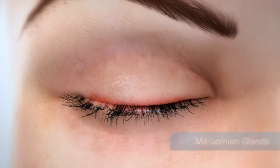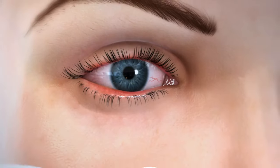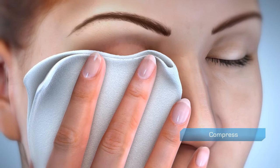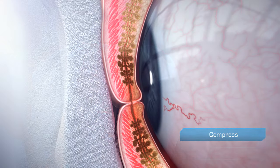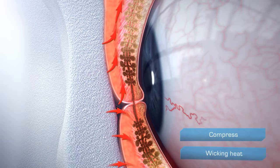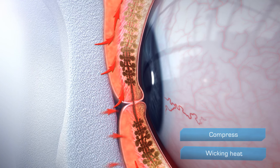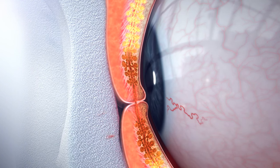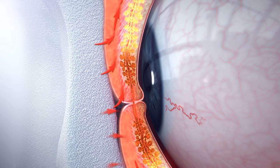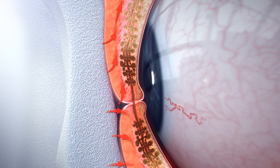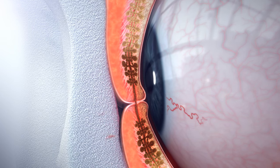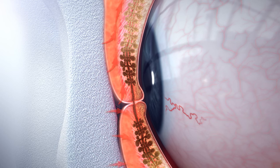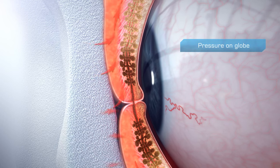One of the most common treatments for meibomian gland dysfunction and associated dry eye is at-home warm compress therapy. This approach has limited clinical effectiveness. Heat is wicked away by blood vessels in the eyelids, limiting the amount of heat reaching the meibomian glands. Beyond the lack of effectiveness and the onerous routine for the patient, use of warm compresses can introduce excessive pressure on the globe.